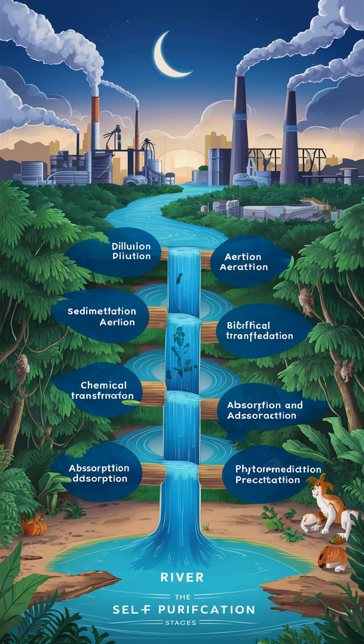To summarize, rivers cleanse themselves through a combination of dilution, aeration, sedimentation, biodegradation, chemical transformation, plant uptake, photolysis, sorption, natural filtration, and dilution with fresh water. These processes work together to reduce the concentration of pollutants, break down harmful substances, and restore the water quality, supporting a healthy aquatic ecosystem.